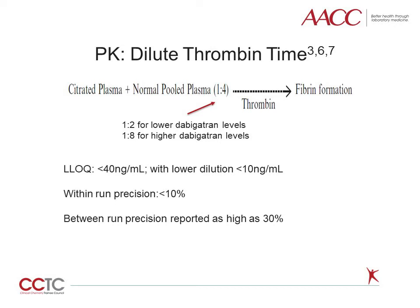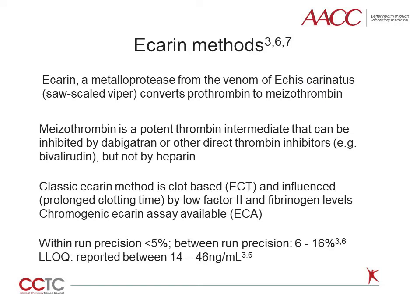An adequate lower limit of detection can be achieved if the sample is properly diluted. ECRIN is a thrombin-like metalloprotease from the venom of Echis carinatus, a soft-scaled viper. ECRIN converts prothrombin to mesothrombin. Mesothrombin is a potent thrombin intermediate that can be inhibited by Dabigatran or other direct thrombin inhibitors such as bivalirudin, but not by heparin. The classic ECRIN method is a clot-based assay called the ECRIN clotting time. A chromogenic ECRIN assay is now available and has advantages over the clot-based method in that the chromogenic assay is not affected by low prothrombin or low fibrinogen levels, both of which will falsely prolong the ECRIN clotting time. The chromogenic method demonstrates good accuracy and reproducibility.